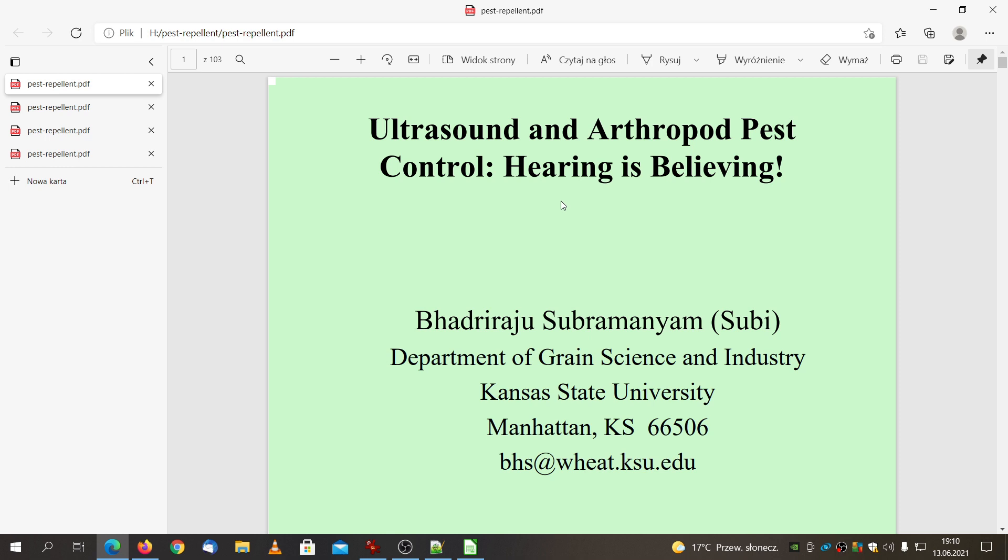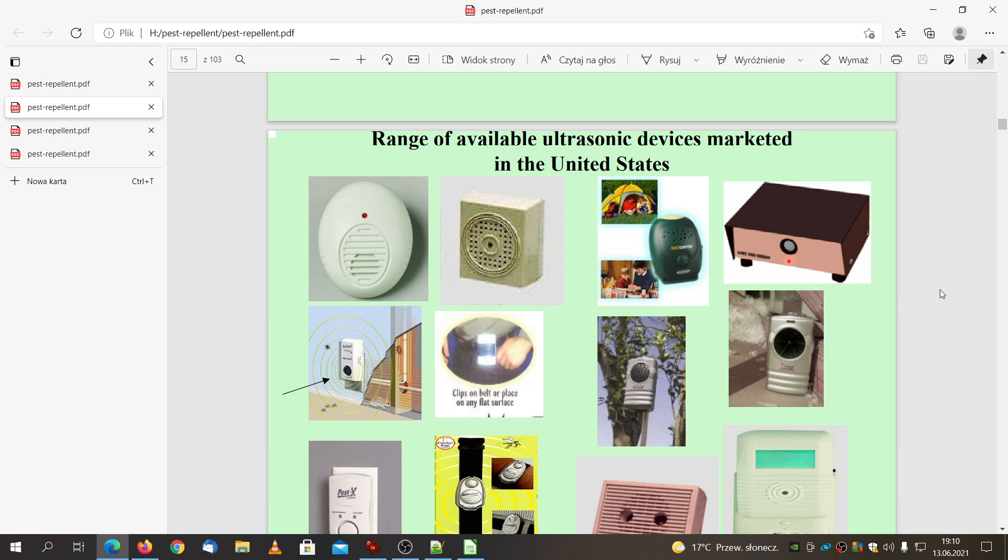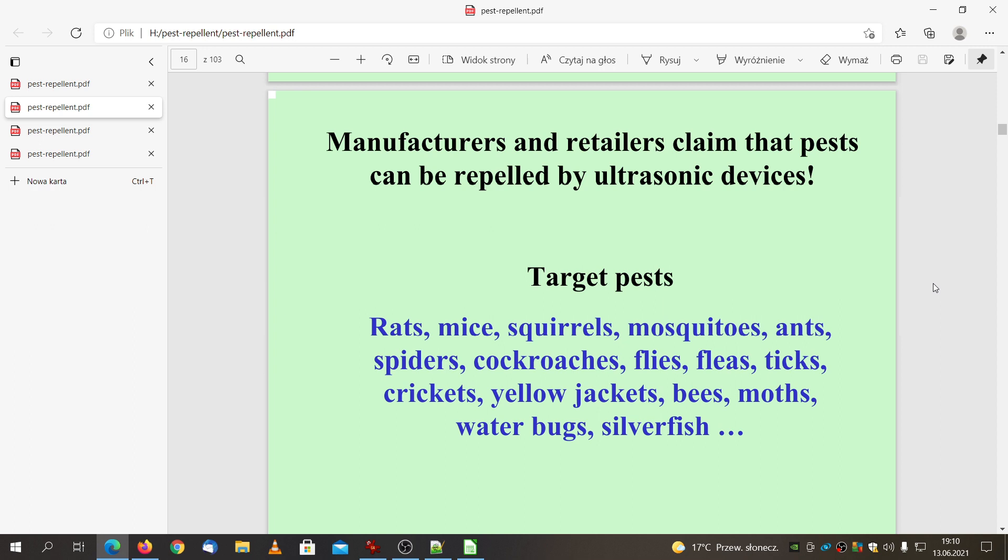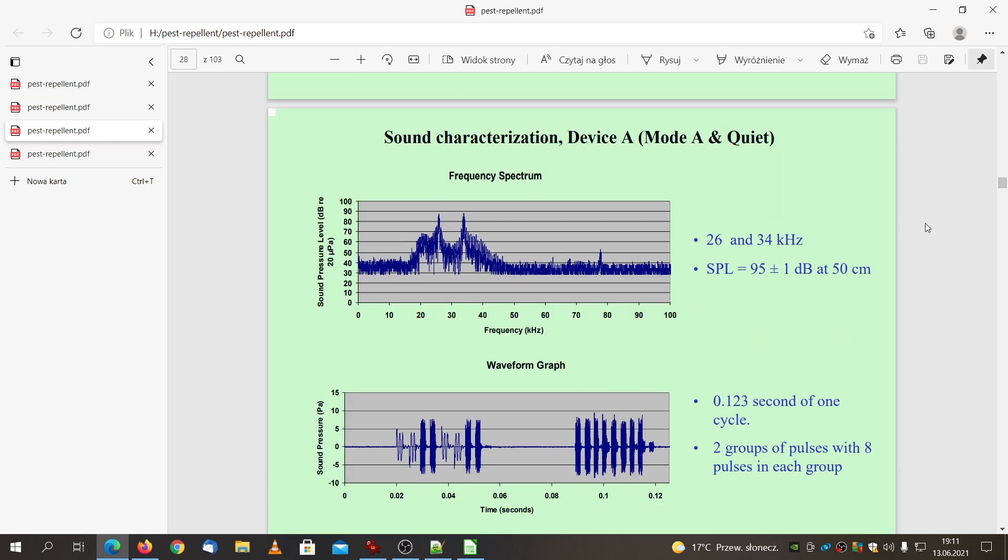As you can see on the screen, there's research from Kansas State University. They've tested plenty of devices that are available on the US market, and they work in the way that they generate ultrasonic sequences that target animals like rats, mice, squirrels, mosquitoes, spiders, cockroaches, and other bugs.